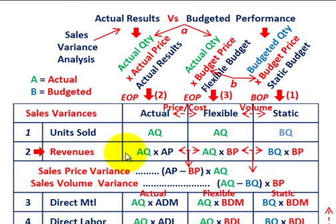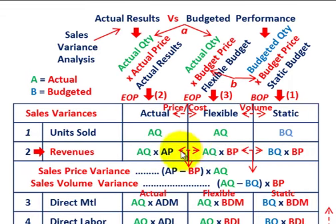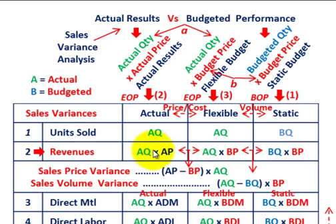Now knowing our revenues, we can determine our sales price variance. That's looking at actual versus flexible amounts. We factor out the actual quantity (AQ) and look at the difference between our actual price (AP) and our budgeted price (BP). So the sales price variance is: (AP − BP) × AQ. Price variance is just the difference between actual and budgeted prices times the total actual quantity — that's comparing actual versus our flexible budget.